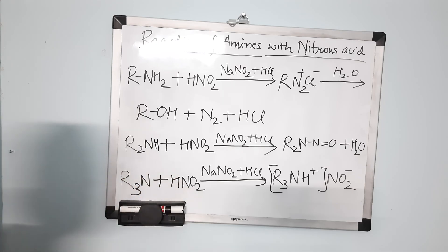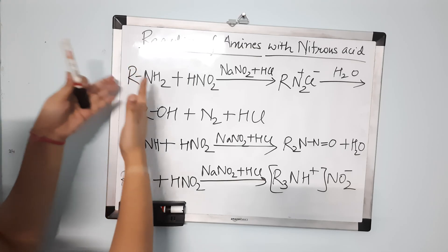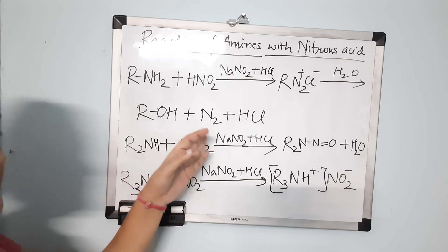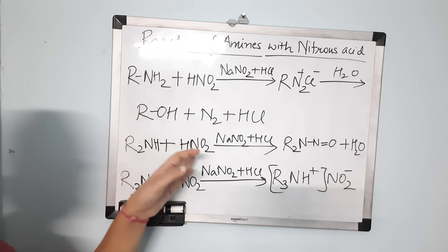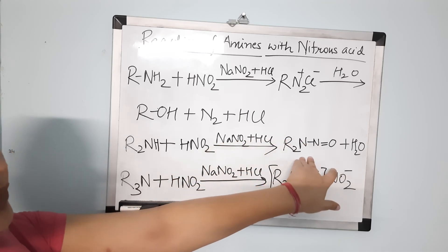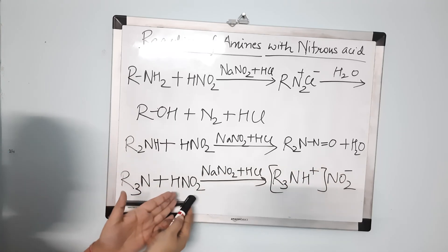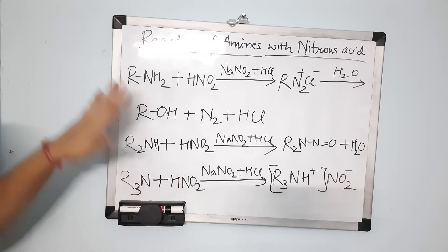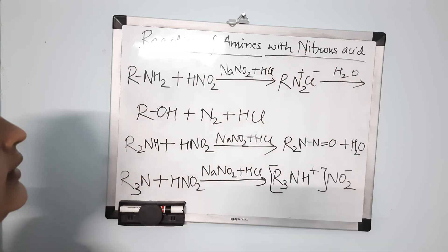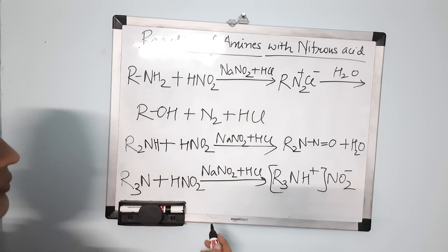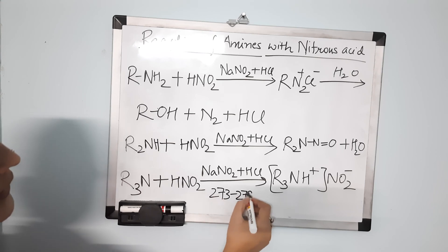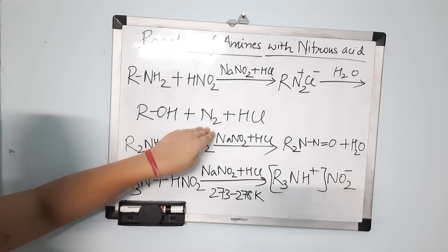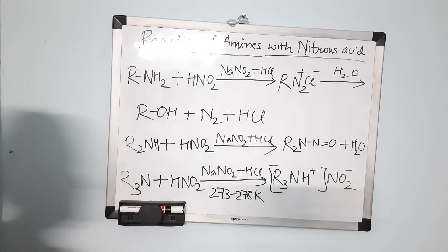This water-soluble salt is formed when you react tertiary amine with nitrous acid. So you can differentiate between primary, secondary, and tertiary amines: primary amine releases N₂ gas; secondary amine forms nitroso amine, which is a yellow oily compound; and tertiary amine forms a water-soluble nitrite salt. The temperature in the reacting mixture is 273 to 278 Kelvin. The amount of N₂ released also characterizes the amino acid and protein present.